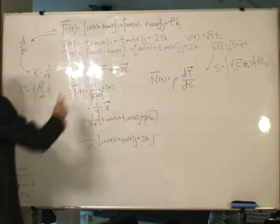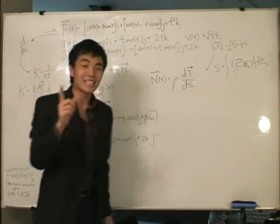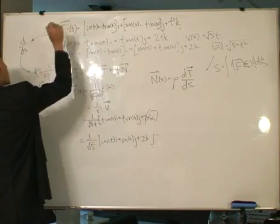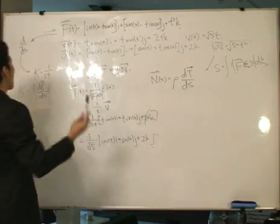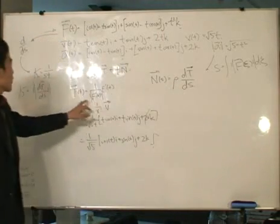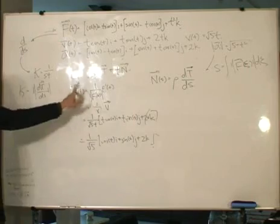Unit tangent vector, what do we have? We've got the position vector. The unit tangent vector, we can get that in terms of t by differentiating the position vector once. But since the position vector is written in terms of t, we will get the unit tangent vector in terms of t, just like I've shown over here. However, we want to differentiate that with respect to s.